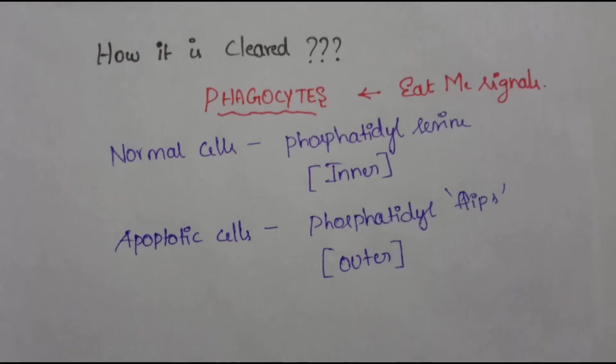How are apoptotic cells cleared from the body? These apoptotic cells and their fragments produce a number of 'eat me' signals which attract phagocytes, and clearance takes place. In normal cells, phosphatidylserine is present on the inner leaflet of the plasma membrane, but in apoptotic cells it flips to the outer surface, attracting phagocytes. Cells dying from apoptosis also secrete soluble factors that recruit phagocytes.